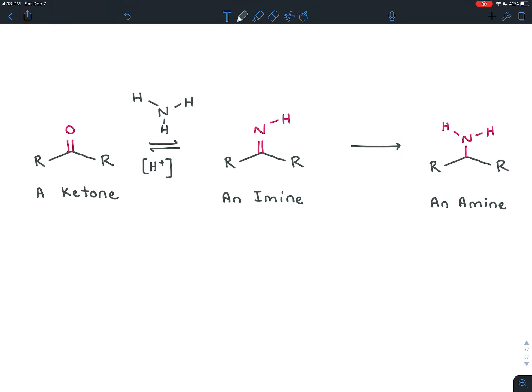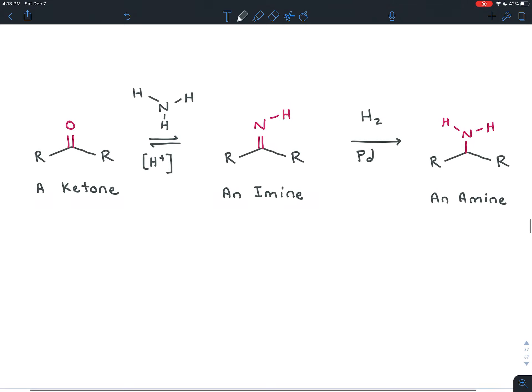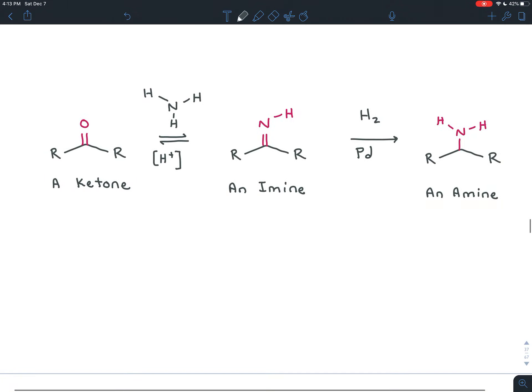One way you could do that is by bubbling hydrogen gas through the solution in the presence of platinum, palladium, or nickel. So for example, you could have a palladium metal catalyst there to turn the imine into an amine. That would work.